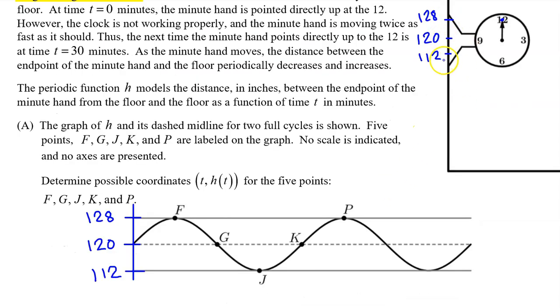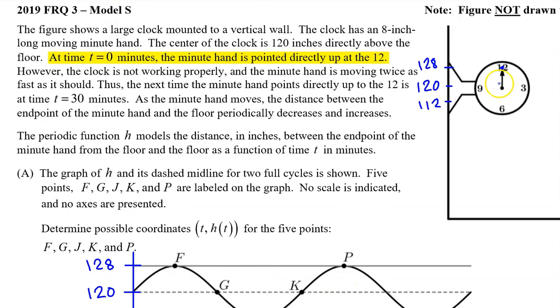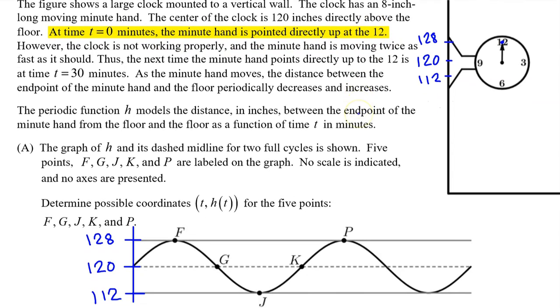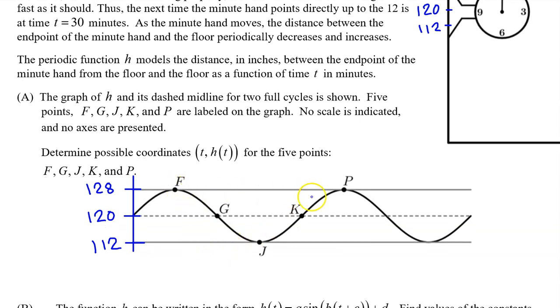Transferring this vertical scale onto our graph of h, we now have the output coordinates for each of the five points. Now let's see if we can find the input coordinates. At time t equals 0, the minute hand is pointed directly up at the 12. So t equals 0 should be at one of the high points. Let's pick this point right here and call it t equals 0.